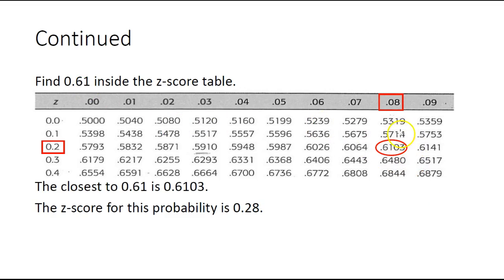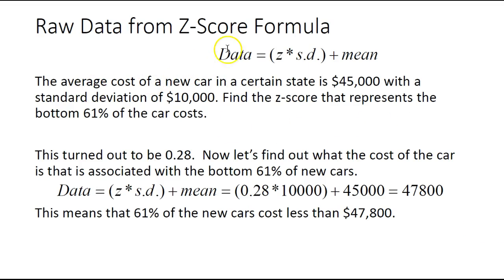When we go to the z-score table, the inside of the table is the probability. We don't have 0.61; the closest is 0.6103. Following it to the edge, we get a z-score of 0.28. We can use the formula: z-score times standard deviation plus mean. With z of 0.28, standard deviation of 10,000, and mean of 45,000, the bottom 61% of cars is marked at $47,800.